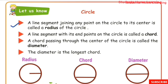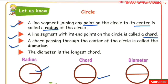Let us know about the circle. A line segment joining any point on the circle to its center is called the radius. The line starts at the center of the circle and ends at a point on the circle. A line segment with its endpoints on the circle is called a chord. A chord passing through the center of the circle is called the diameter. The diameter is the longest chord.